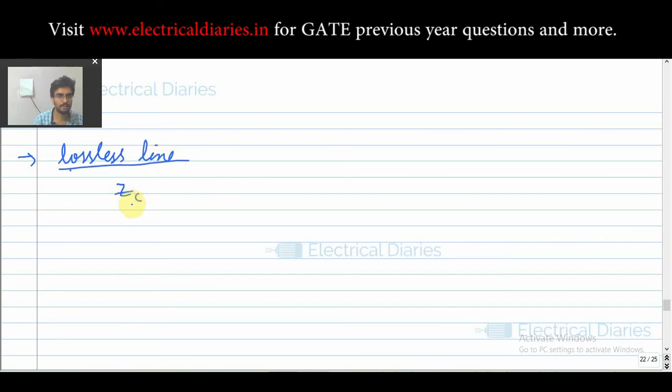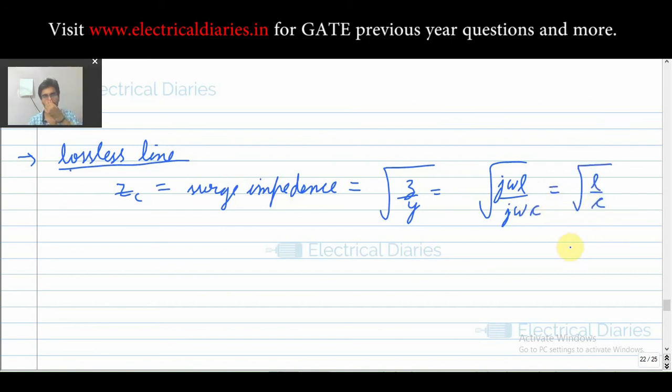When you assume the line is lossless, the same thing that you were calling characteristic impedance is now called surge impedance. Now comes the definition of surge impedance, and it is given by the same thing, Z by Y, but this time Z will be jωL upon jωC, so it will come out to be L by C. Or if you multiply with the length of the line, it will be capital L by capital C, where capital L is the total inductance of the line and capital C is the total capacitance of the line.